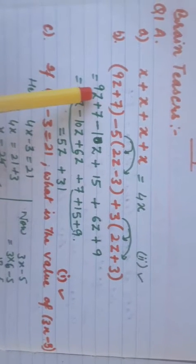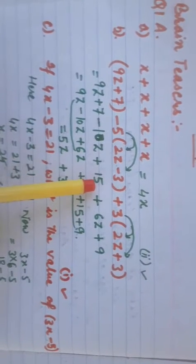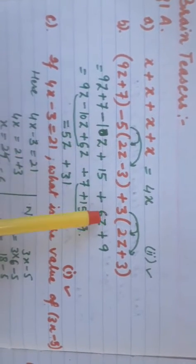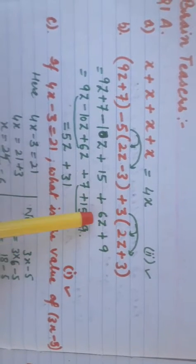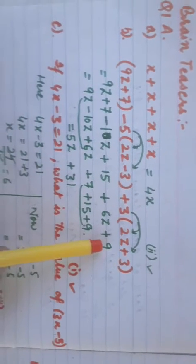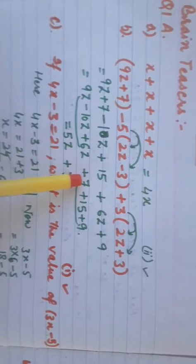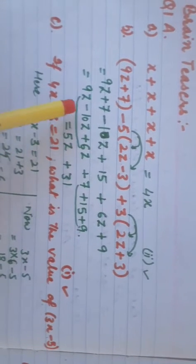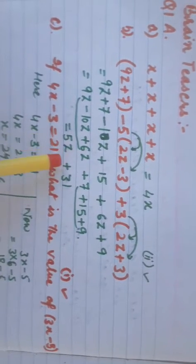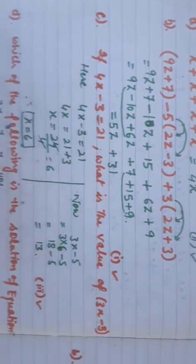Part B: we have to simplify this. First we open the bracket: 9z plus 7 minus 10z plus 15 — since minus times minus gives plus — then 5 times 3 is 15, 5 times 2z is 10z, plus 3 times 2z is 6z, and 3 times 3 is 9. Now separating like terms: 9z minus 10z plus 6z gives 5z, and 7 plus 15 plus 9 gives 31. So the answer is 5z plus 31. The first option is the correct answer.